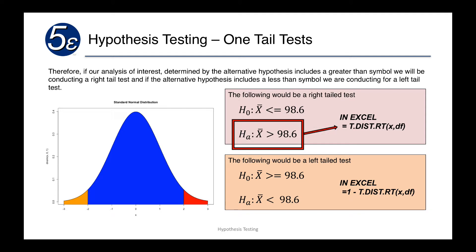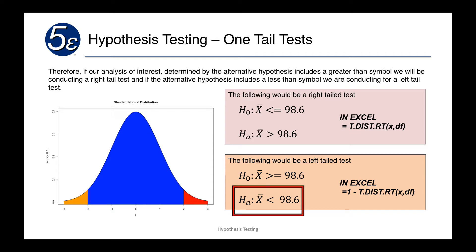If the alternative hypothesis says the sample mean is greater than 98.6, we're going to have a right-tail test. In Excel, we use t.dist.rt given some value and degrees of freedom, which will give us the p-value to compare against. For a left-tail test, if the alternative hypothesis has a less-than sign, we calculate one minus t.dist.rt with the t-statistic as the x-value and the appropriate degrees of freedom. Right-tail or left-tail is determined by the direction in the alternative hypothesis.